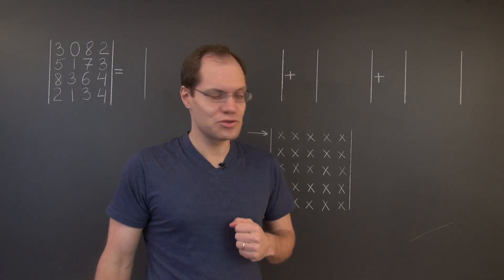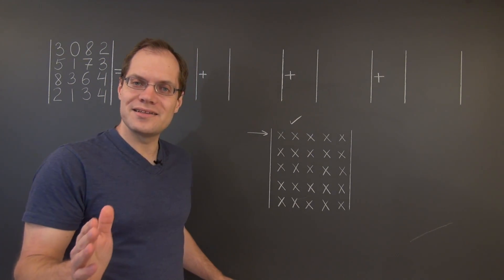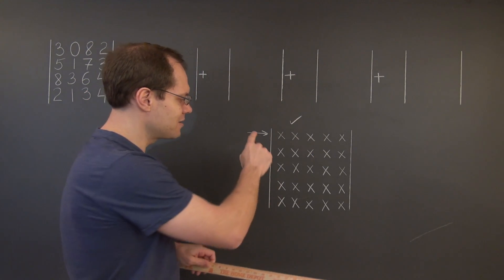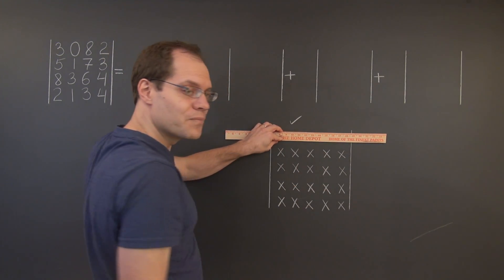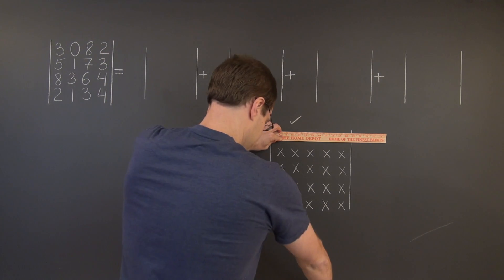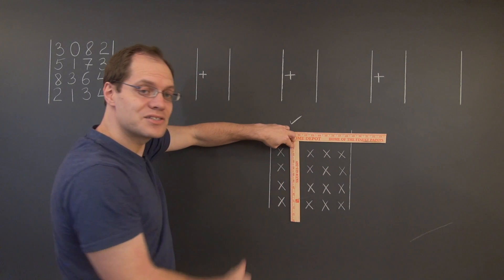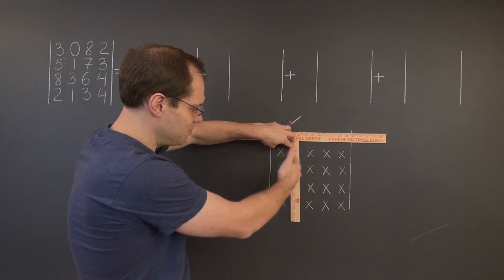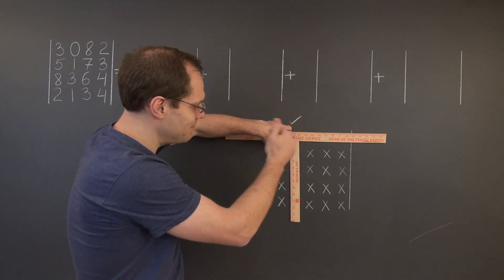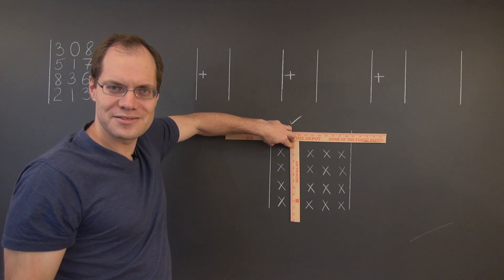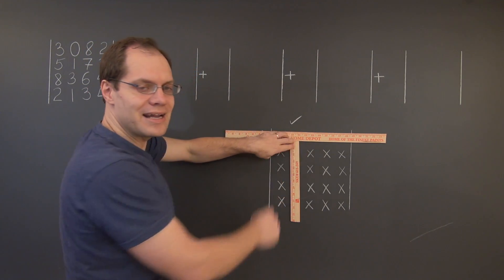For each entry in the chosen row, you have to do the following: you have to mentally cross out the row that it's in — which will be the same first row for each one of these entries — and also the column that it's in. That will leave you with an n-1 by n-1 matrix, and this n-1 by n-1 matrix, or rather its determinant, is known as the minor, or the cofactor, associated with that entry.